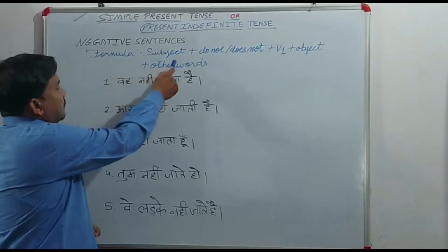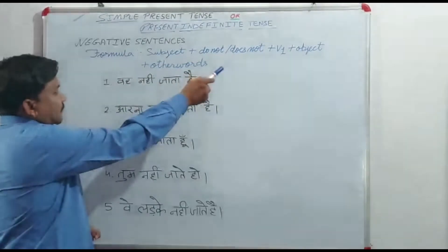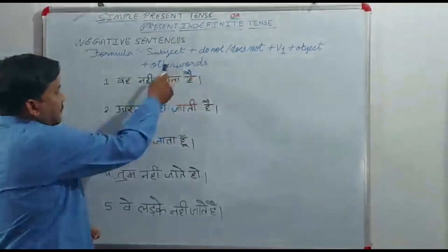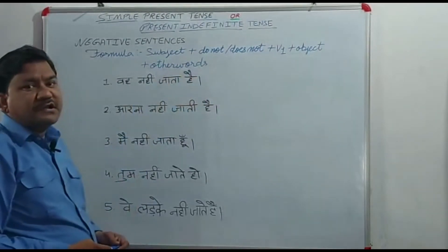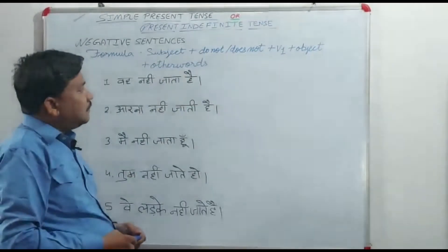The formula is: subject plus do not, or does not, plus verb of the first form, plus object, plus other words. Singular subject uses does not, plural subjects use do not.